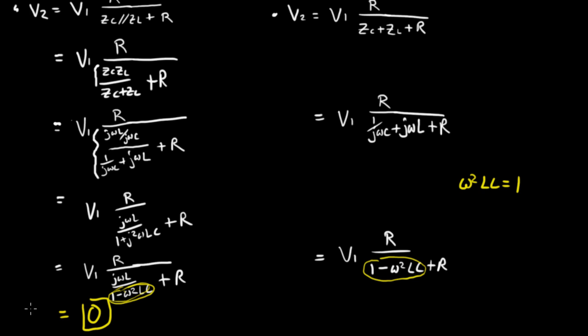V2 is going to be 0 at resonance, this condition. And for this expression over here, when 1 minus 1 is plus R, when that's the case we have this expression goes to 0 and we have R over R which is 1 and so it's left with V1,